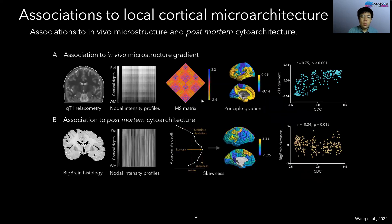Next, we assessed associations to local critical microarchitecture. For quantitative T1 relaxometry, we constructed several intravolumetric surfaces and sampled intensity profiles of these surfaces. We cross-correlated the nodal intensity profiles to generate a microstructure similarity matrix. Based on these metrics, we estimated the principal gradients and found a significant correlation between the QT1 gradients and CDC.